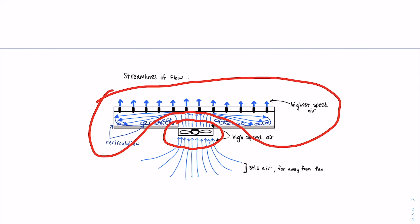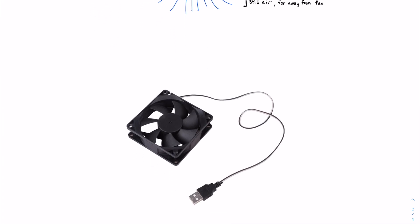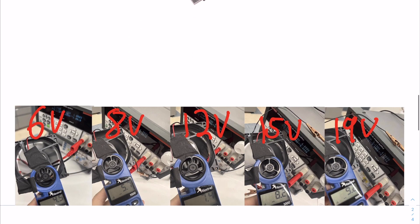The fan is an electrical mechanical device. It consists of impellers connected to a centerpiece which is spun by an electrical actuator, and we can see that as we increase the input voltage, the airspeed resulting from the fan actually increases.